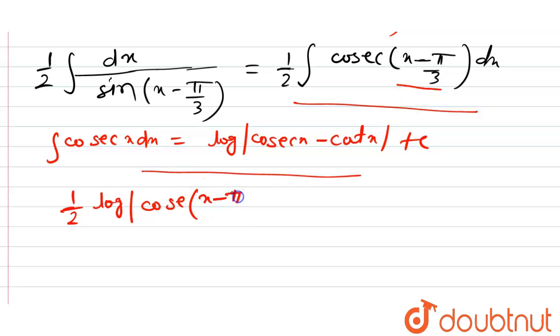So, it is x minus pi by 3 minus cot of x minus pi by 3 mod plus c. Hence, the value of integration is equal to this. This is our answer.